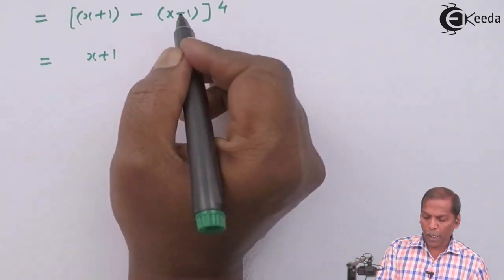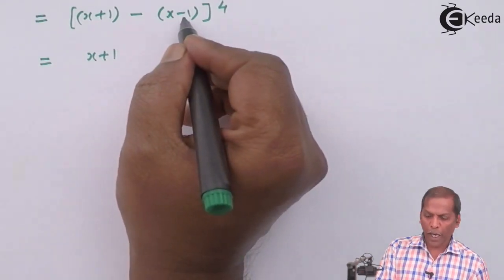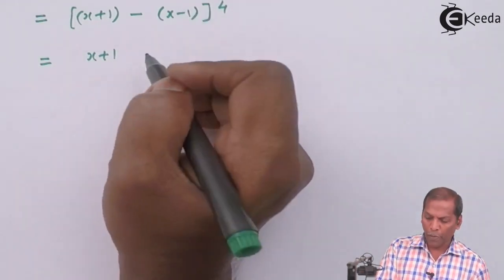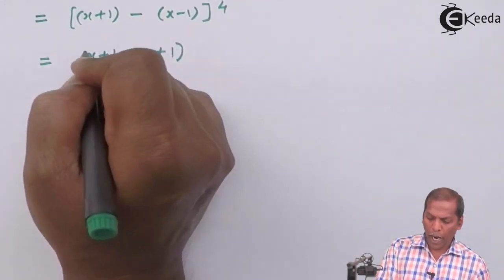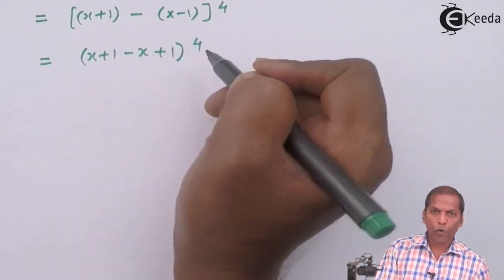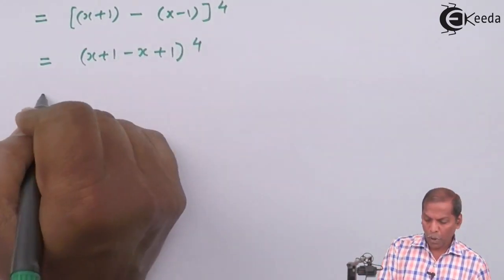Now for the second bracket, outside is minus sign. So on opening that bracket we get -x+1, whole bracket raised to the 4th power.